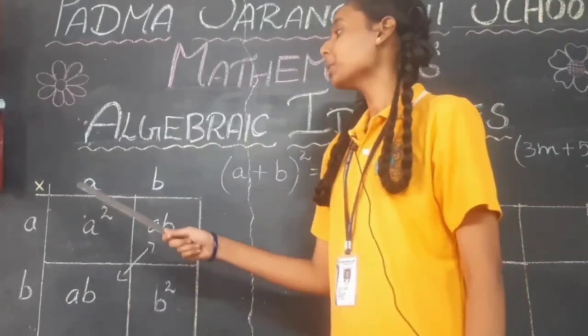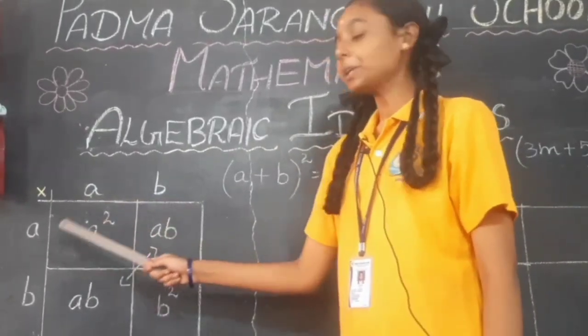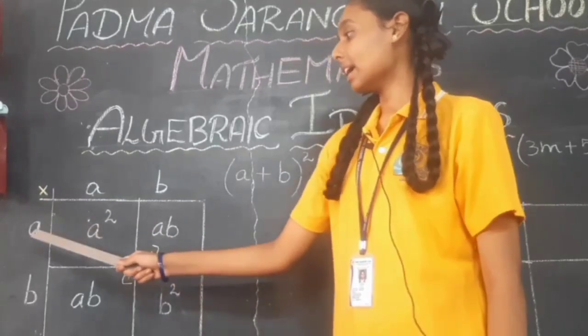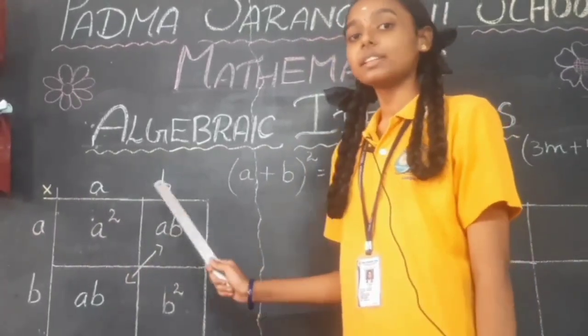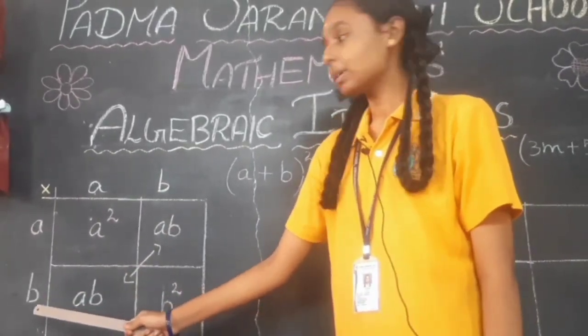First we have to multiply the A with A and B. A into A is A square, and A into B is AB. Then we have to multiply the B with A and B. B into A is AB, and B into B is B square.